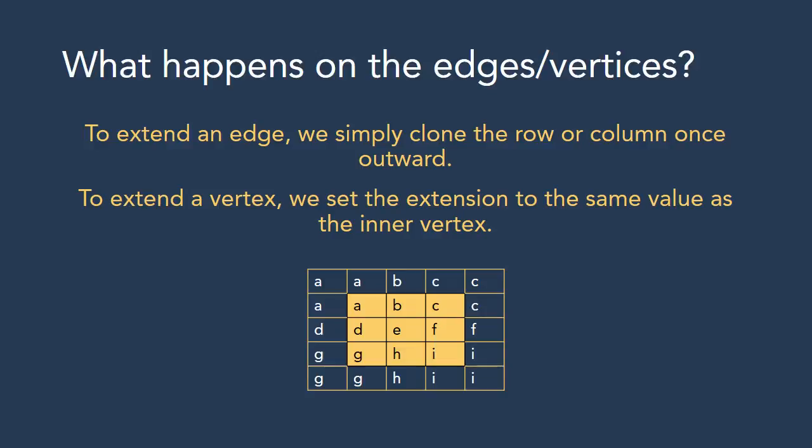But what happens on the edges and vertices? For example, consider a 3×3 matrix ABCDEFGHI. If we try to convolute on any of the corner cells other than E, we run into a problem because their neighborhood is not well defined. So for cells along the border, we create a pseudo-border by cloning the edges and vertices outwards, and use this extended neighborhood for all our calculations. After the convolution operation is done, we can safely delete this imaginary border and reduce the image back to its original resolution.